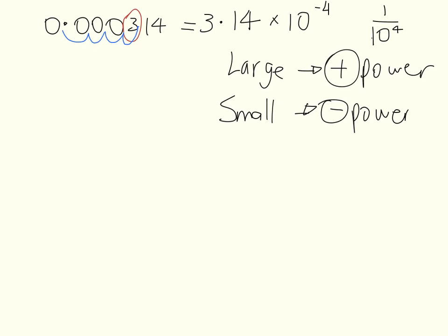So if we were ever dealing with a very large number, you're going to have 10 to the power of a positive number. Very small digits, 0.000 something, we're going to have a negative power involved.